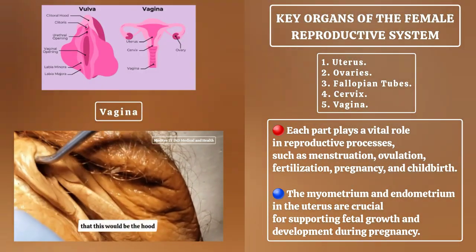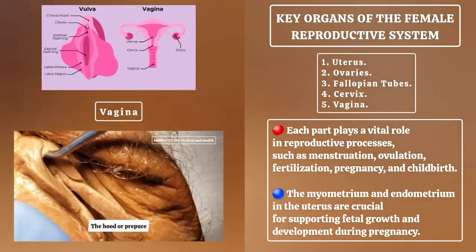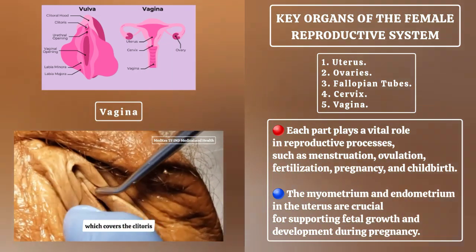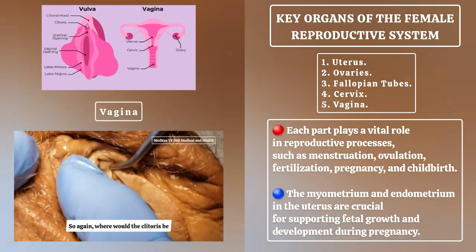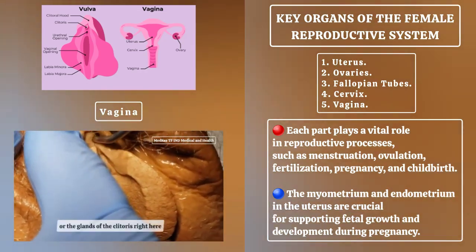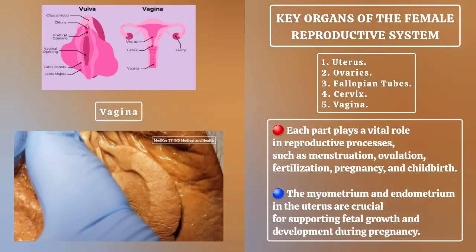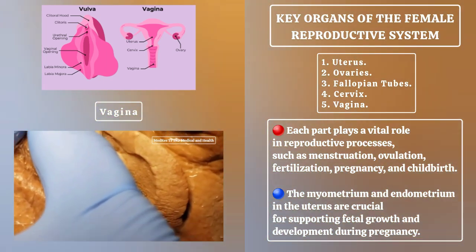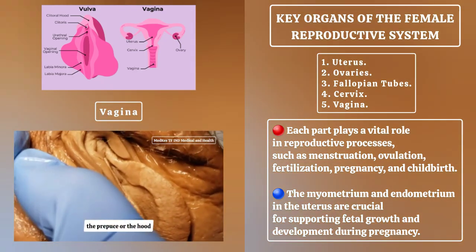Right here, this would be the hood — the hood or prepuce, which covers the clitoris. Where would the clitoris be? You can see the tip, or the glans of the clitoris, right here. This is the clitoris and the prepuce, or the hood.